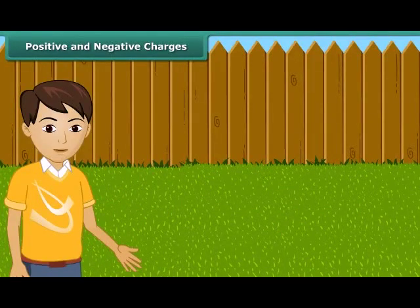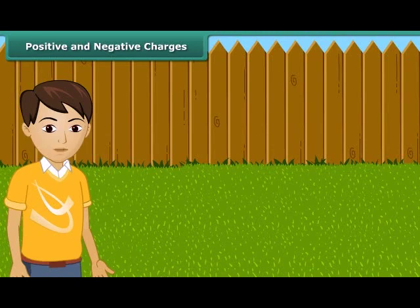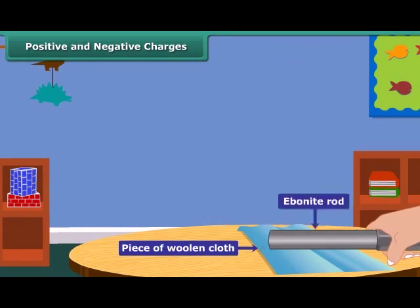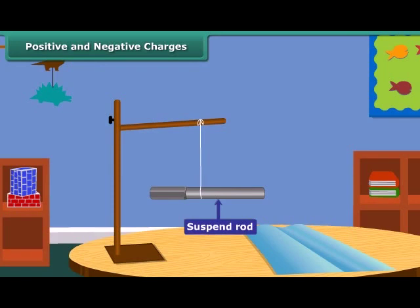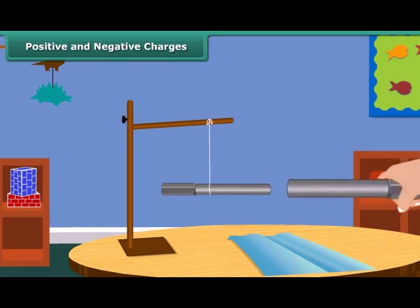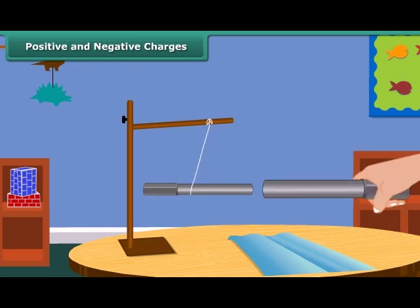Let us perform an activity to understand positive and negative charges. Take an ebonite rod and rub it with a piece of woolen cloth. Now suspend the rod by tying a thread through its middle. Now charge another ebonite rod in the same way and bring it close to the suspended rod. What do you notice?